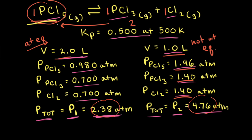The net reaction keeps moving to the left until equilibrium is reestablished. When equilibrium is reestablished, there will be a new total pressure, which we'll call P3. Our goal is to calculate P3 so we can compare it to P1 and P2, both quantitatively and qualitatively.